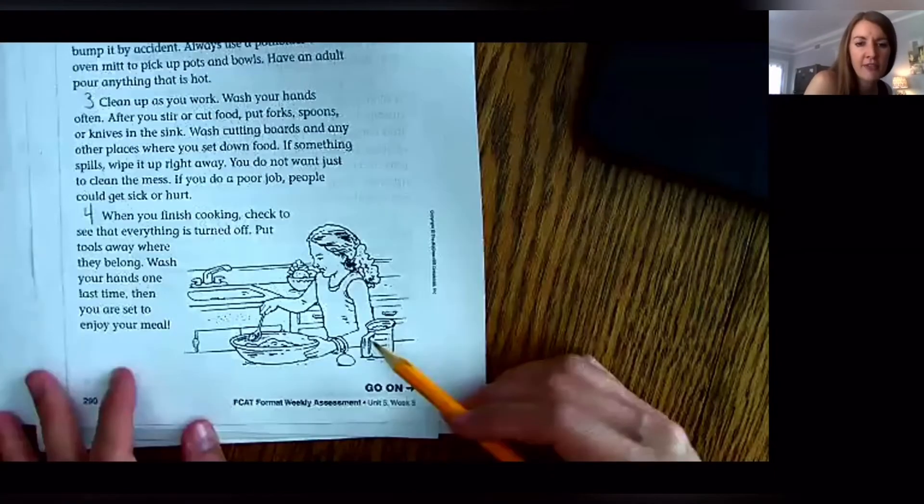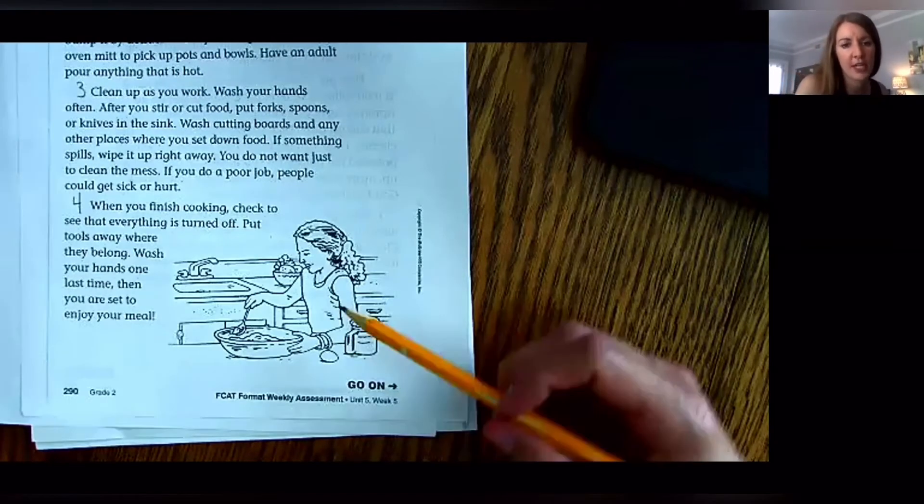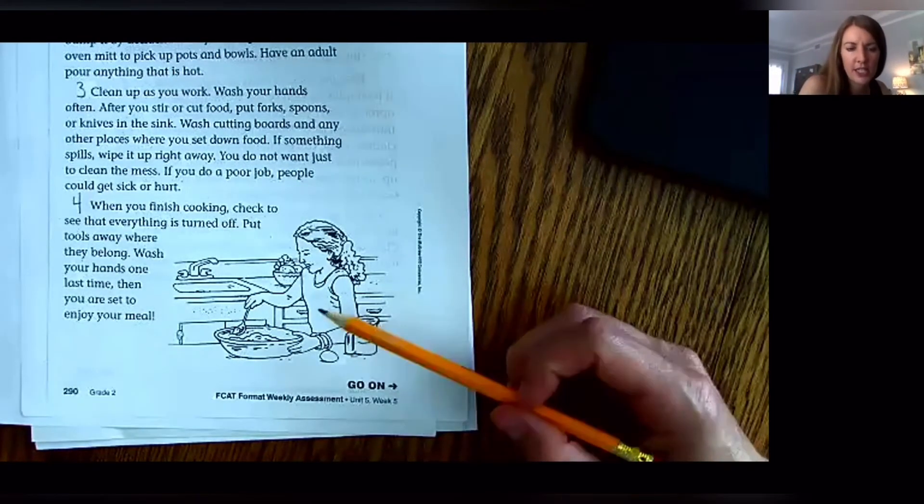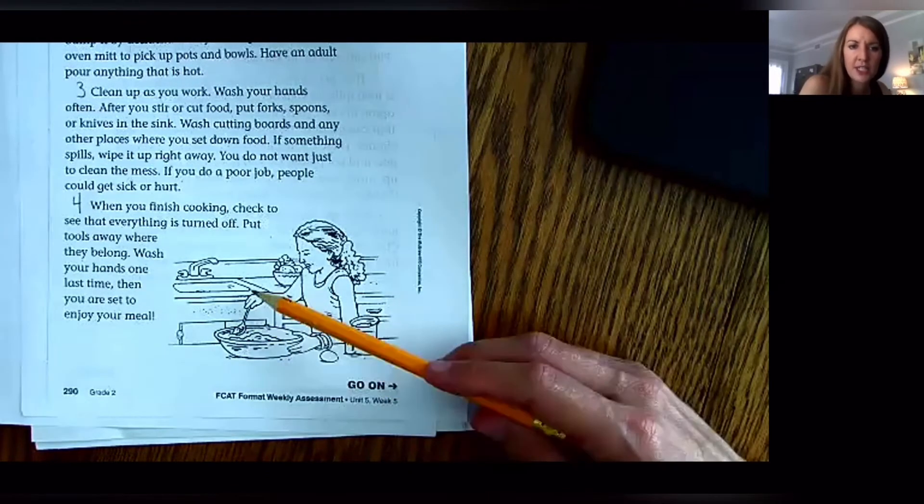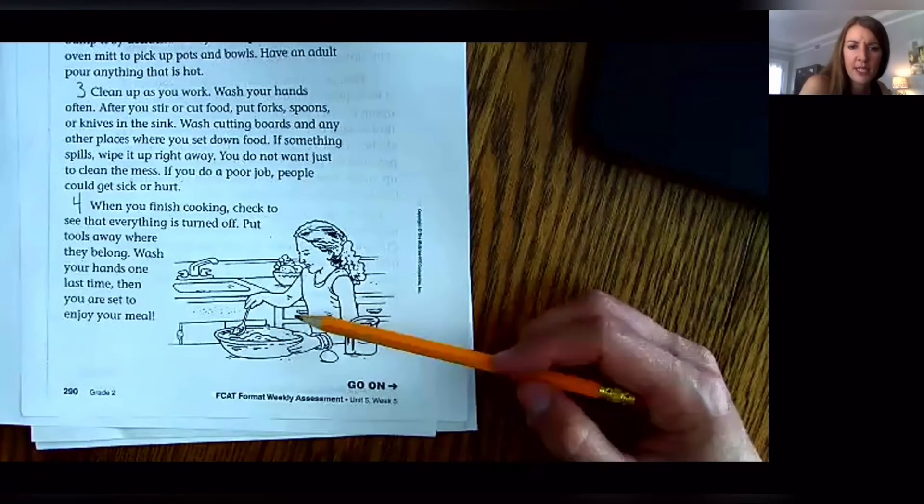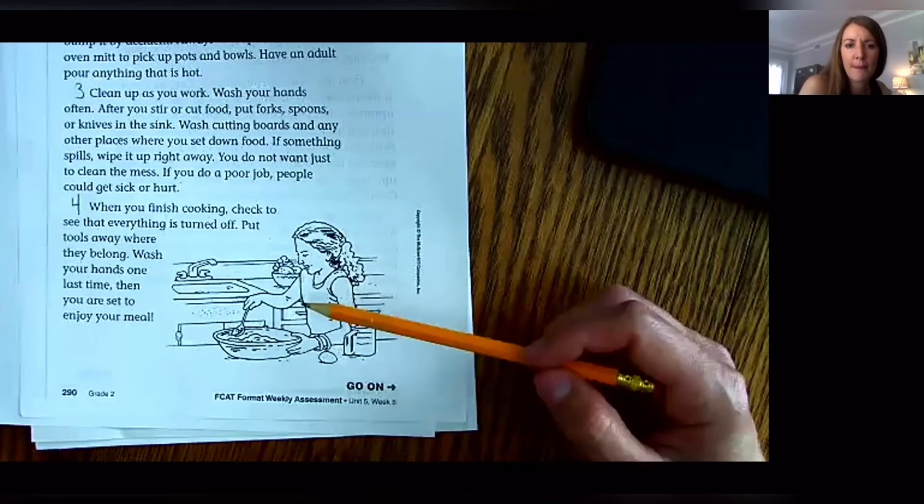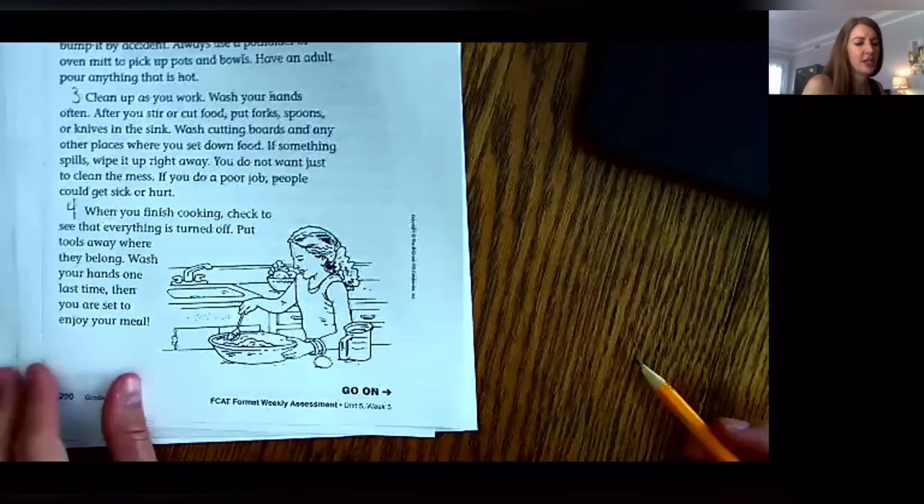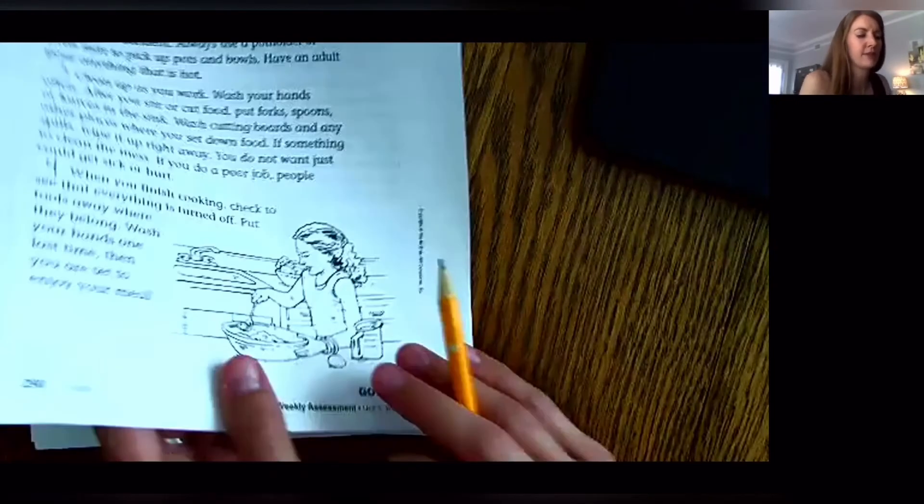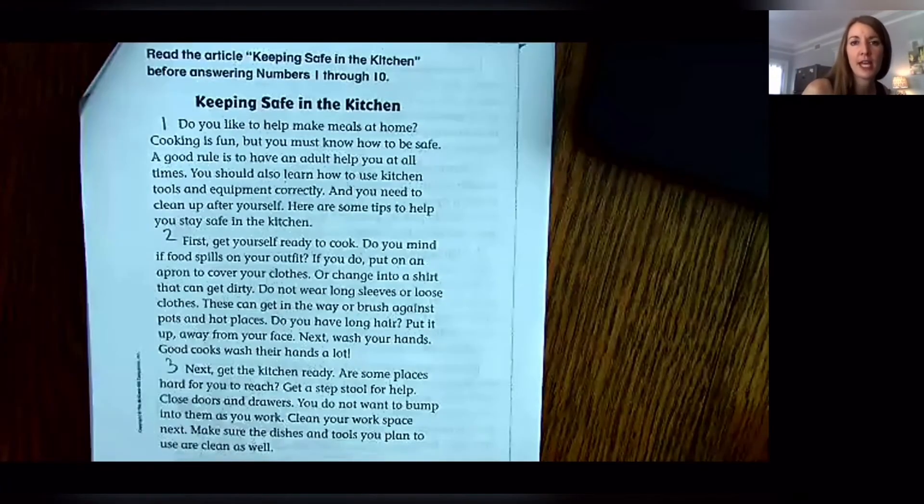The next thing you do is you look at the picture if they have one, and you can use that along with the title to make further predictions. So I see a girl, it looks like she's stirring something in a bowl. She just looks like she's in a kitchen because I see a big sink and some cabinets and a measuring cup and an egg. But I'm not sure how they're going to tell us to be safe when you're stirring something. So I'm not quite sure about the safety aspect yet. That's why we're going to start reading.